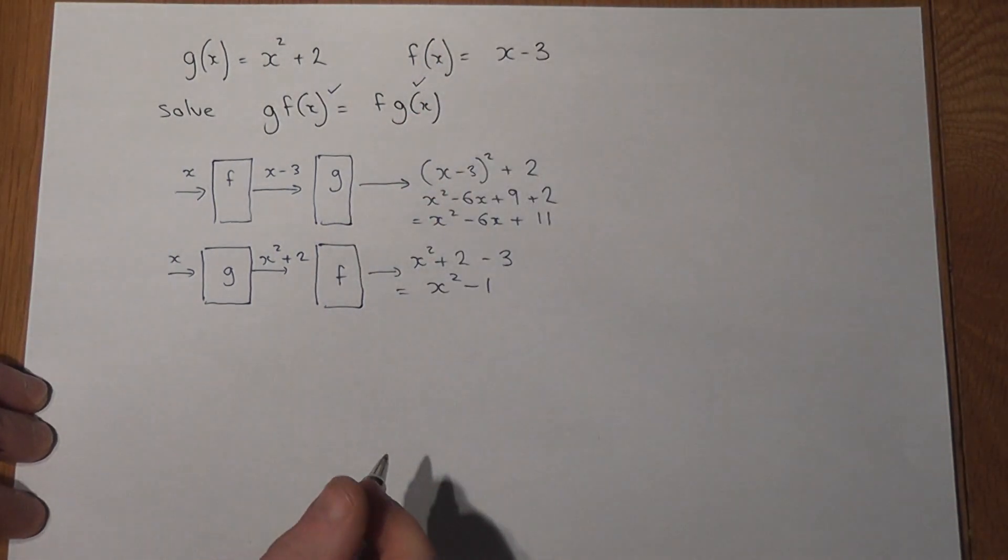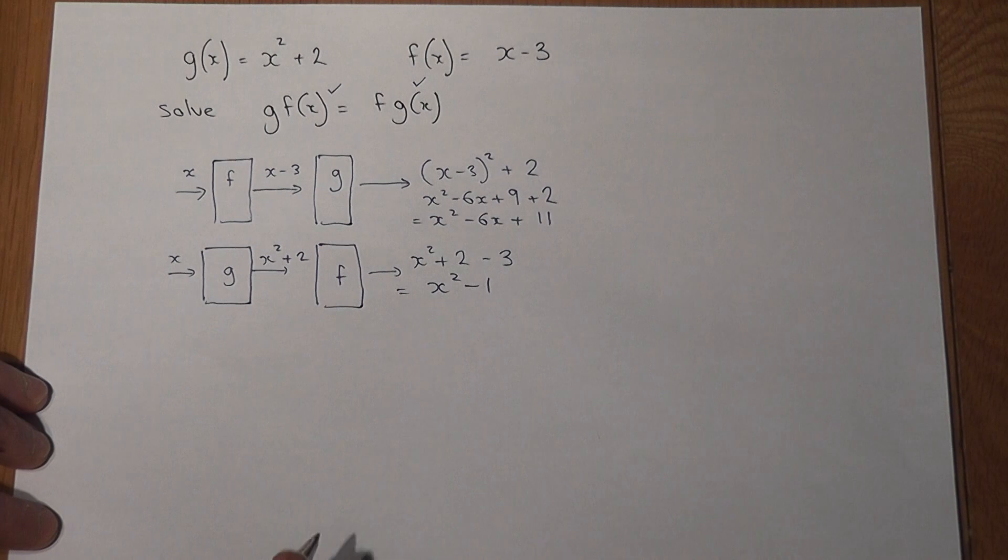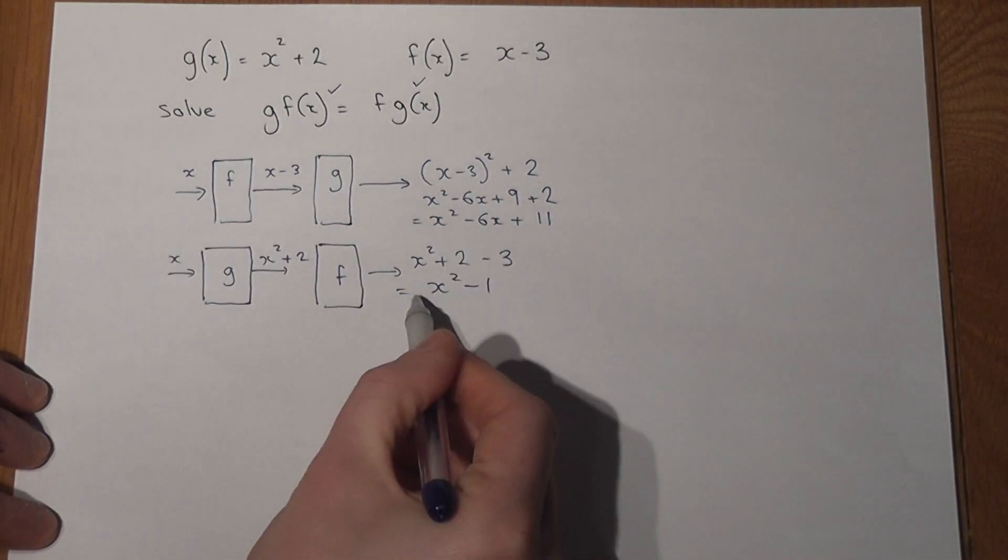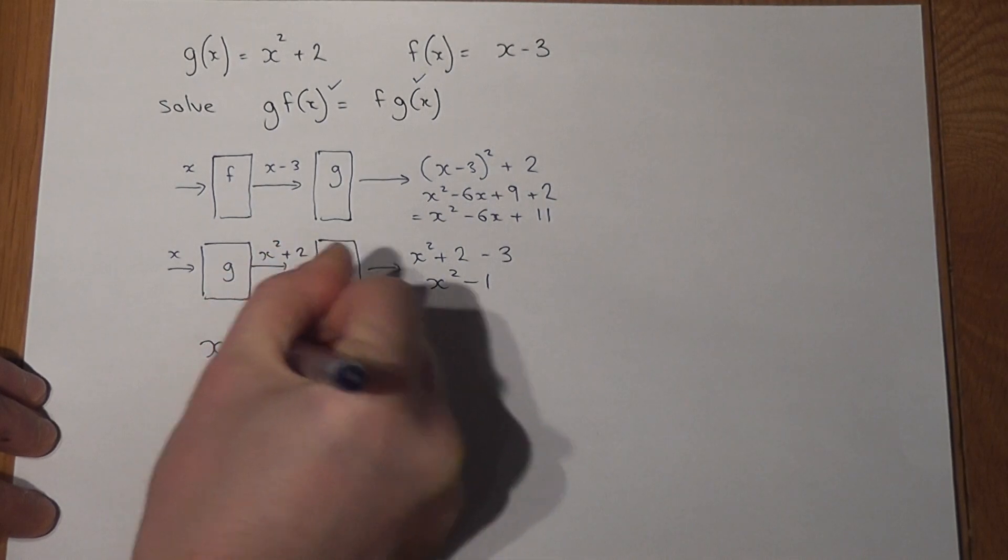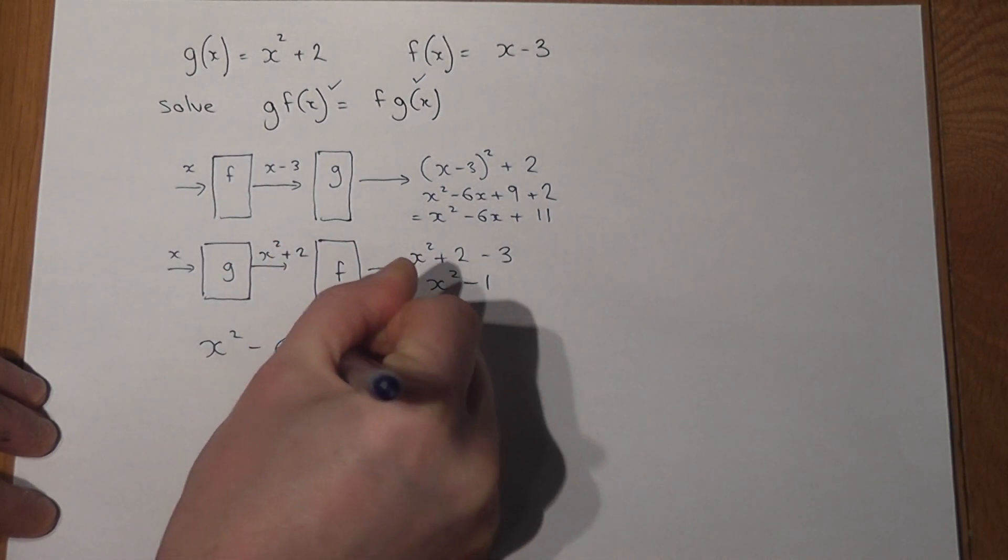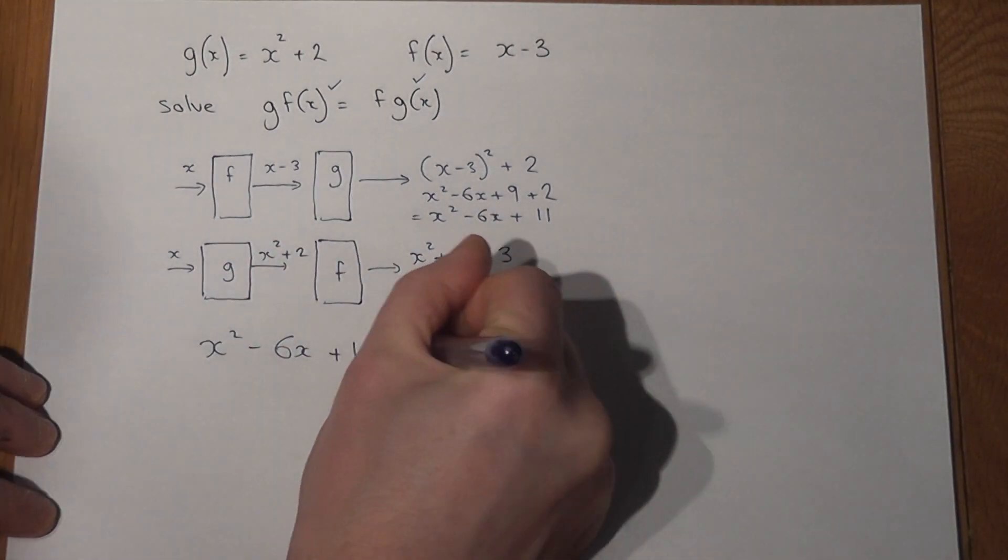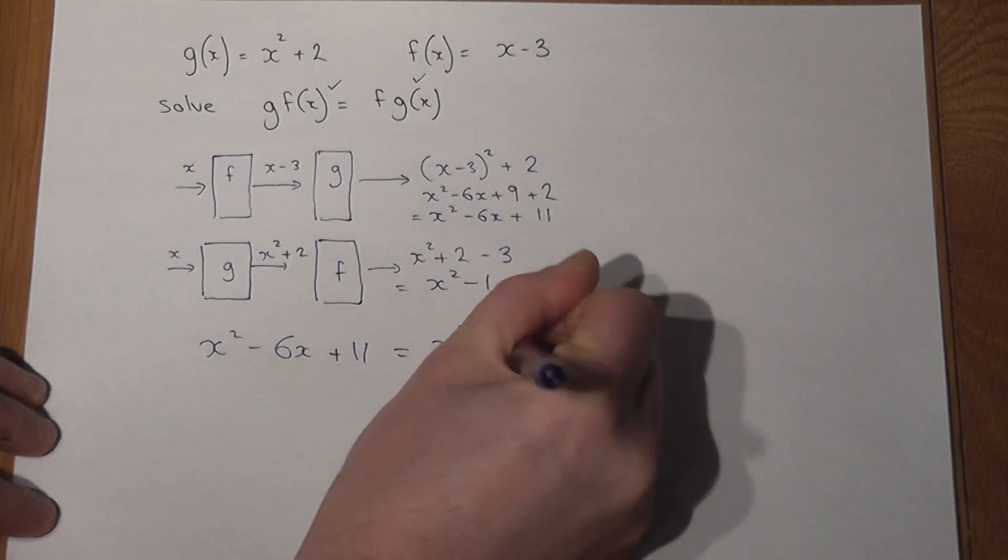So we've found the left hand side and the right hand side. The equation becomes x squared take away 6x plus 11 is equal to x squared minus 1.